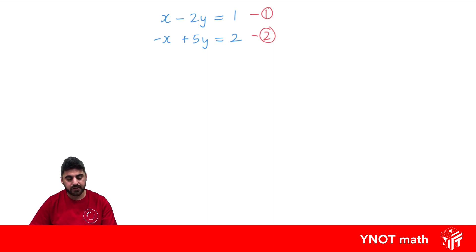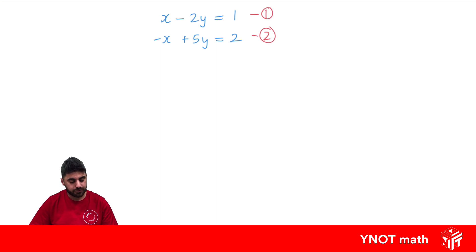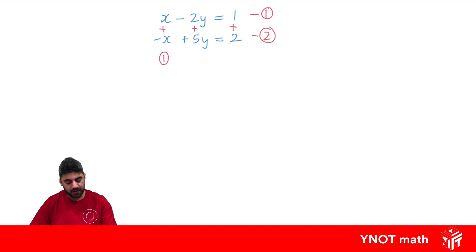Because if this is the case, we'll either be able to add the equations together or subtract them to eliminate one of the variables. In this case, if you add these two together, x and minus x will give 0 and it will eliminate the variable. So once you know you need to add or subtract, I like putting in signs in between all our terms, knowing that we're going to add them together. We're going to add equation 1 and 2 to eliminate x.